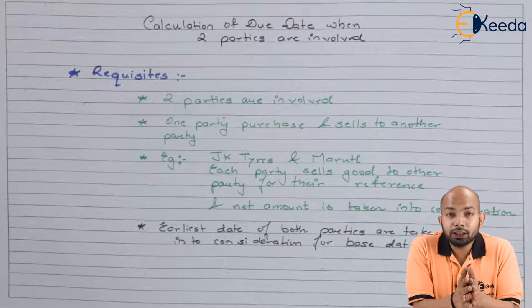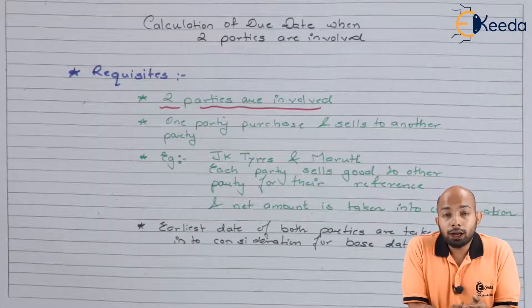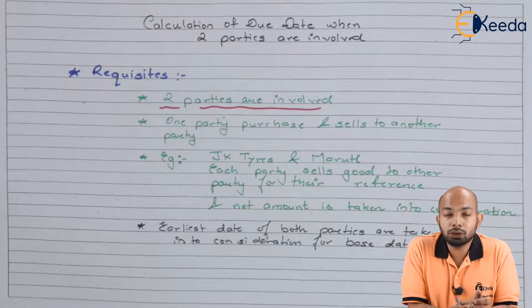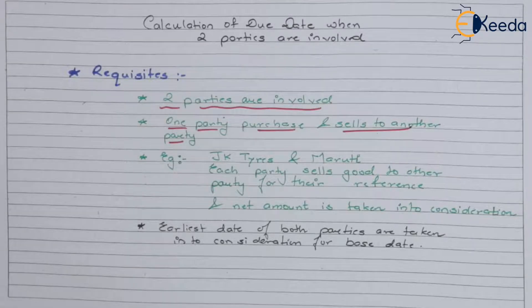The requisites are: two parties are involved in this format. One party purchases and sells goods to the other party. Let's take an example: JK Tire and Maruti Suzuki. JK Tire will sell their tires to Maruti, and Maruti will sell their cars to JK Tire and their employees. Instead of separate payments for